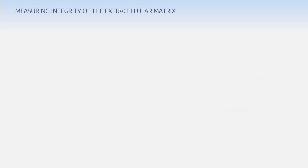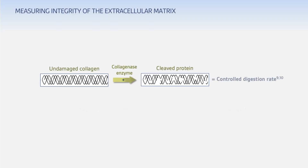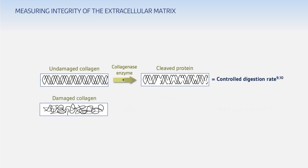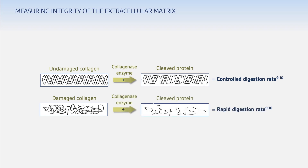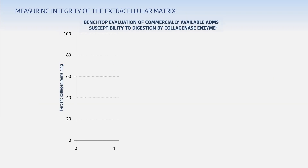When a tissue matrix is damaged, it becomes more susceptible to digestion by a collagenase enzyme. The natural rate of digestion for undamaged collagen is dictated by the accessible protein cleavage sites. If a matrix is damaged during processing, the collagen becomes unwound, exposing additional previously hidden protein cleavage sites, which will accelerate the rate of collagen digestion.